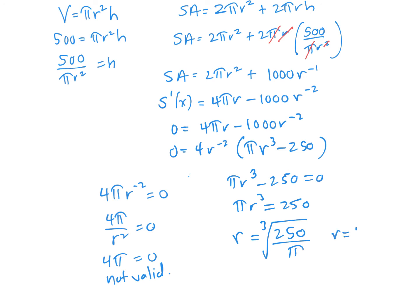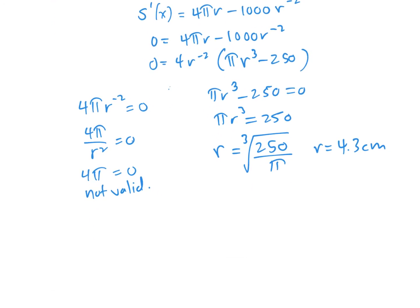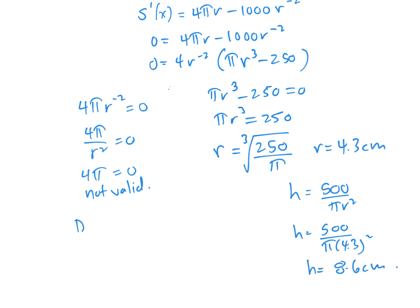With r equals 4.3 centimeters, we substitute back: h equals 500 divided by pi times 4.3 squared, giving h equals 8.6 centimeters. The radius is 4.3 centimeters and the height is 8.6 centimeters.